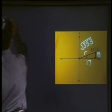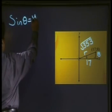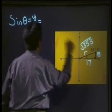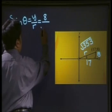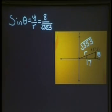Let's start with sine. sine of theta is equal to y divided by r, and our y is 8 divided by r, which is the square root of 353. Now,